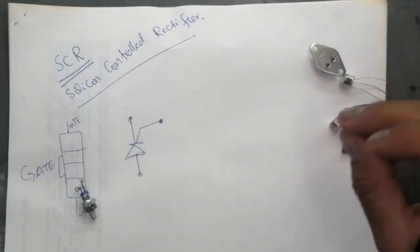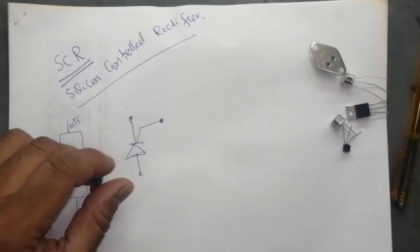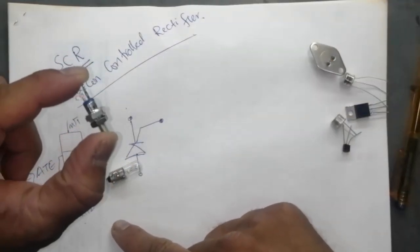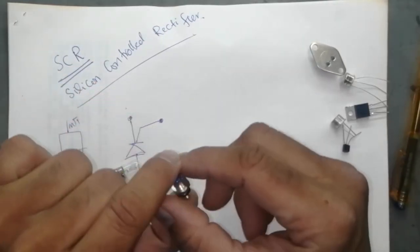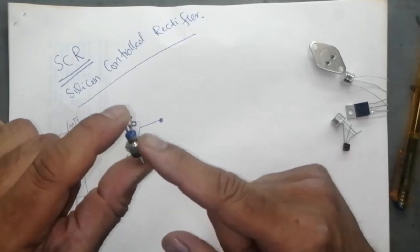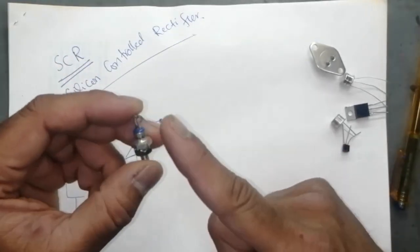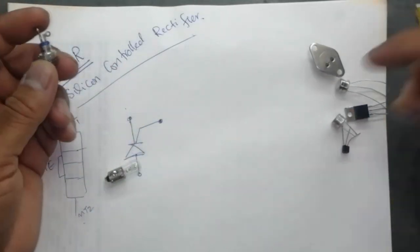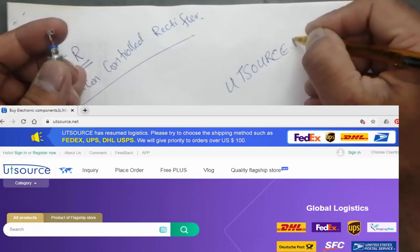We will check it. I will demonstrate the easiest way how we can test SCR silicon controlled rectifier. For the best demonstration I will use a lamp. Sometimes it is also used for rectification from AC to DC to regulate the voltage. Because I was facing problem in power supply, I purchased it from online shopping from utsource.net.